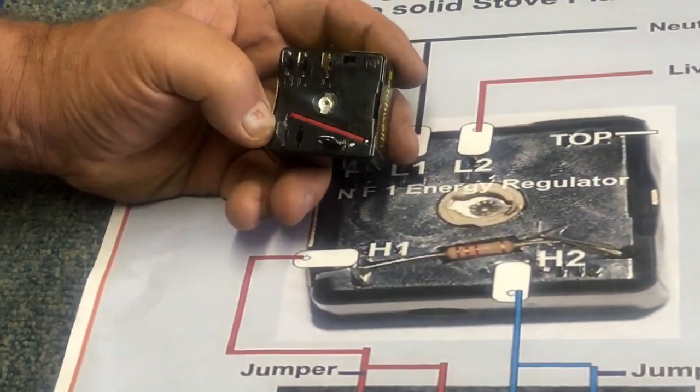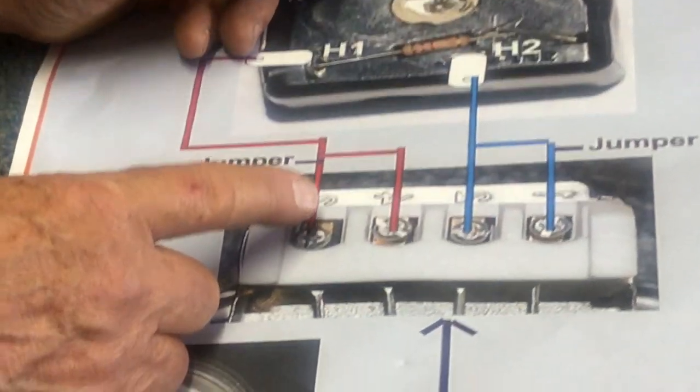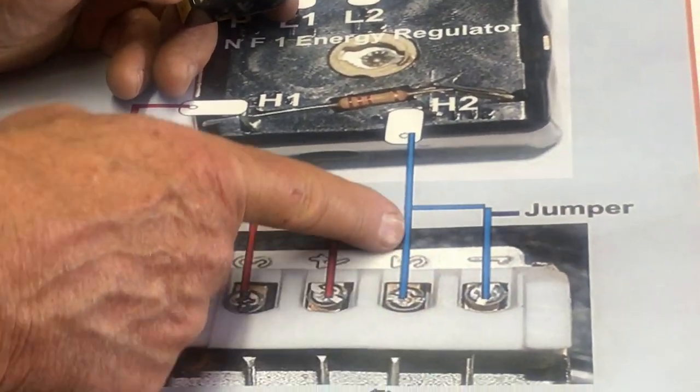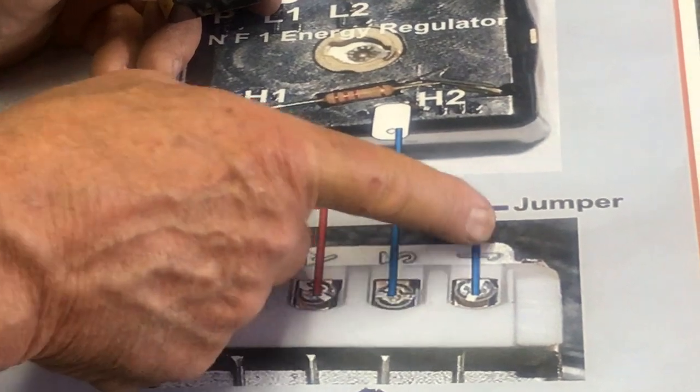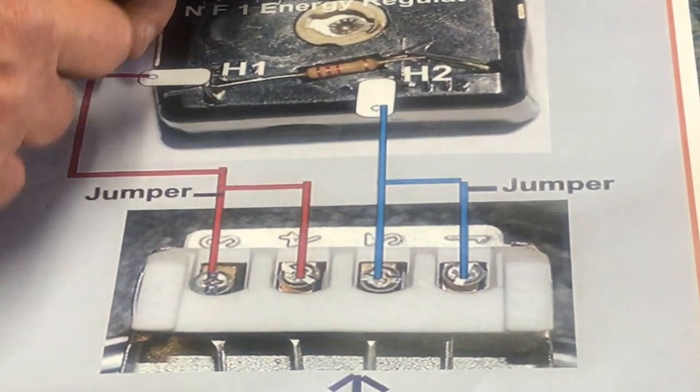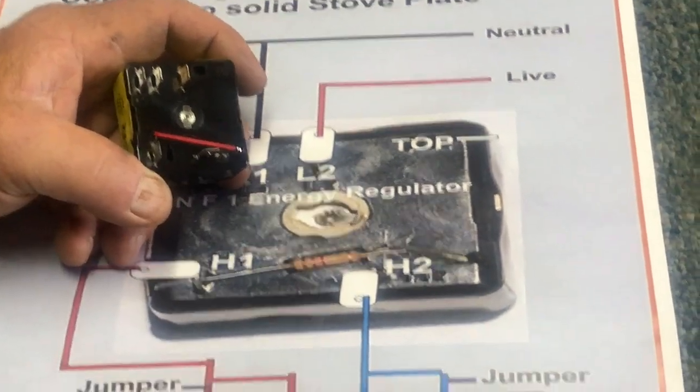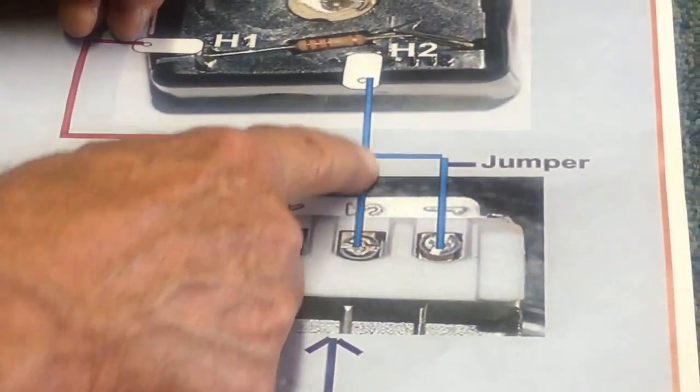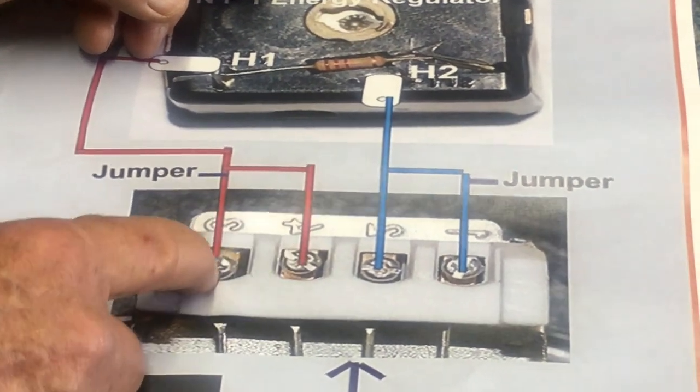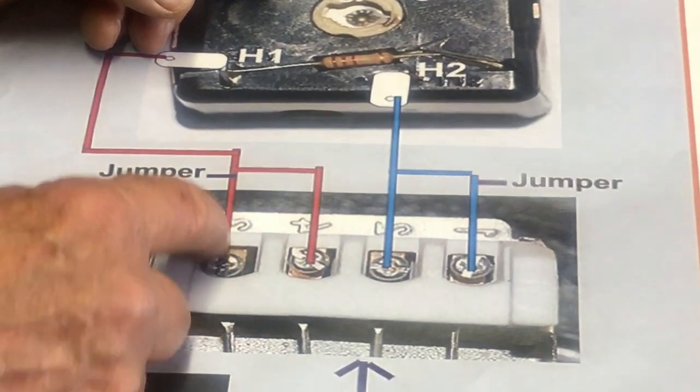To connect the thing is very easy. If you go to your stove plate, you'll see your stove plate is written 1, 2 on your bottom of your plate here. 1, 2, 4, 3. For this specific switch, you connect 1 and 2 together using a jumper. You connect 4 and 3 together using a jumper.